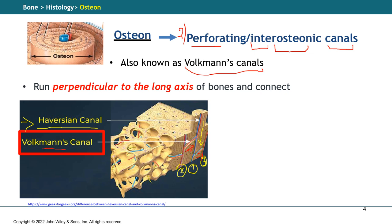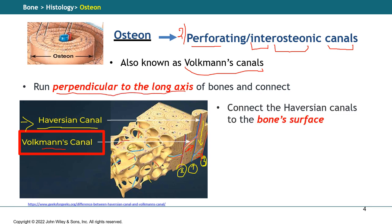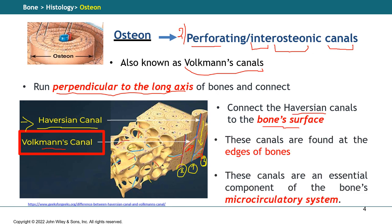The main difference between these canals and the previous ones is that these run perpendicular to the long axis, as shown in the schematic. They are very important because they connect the Haversian canals to the bone surface. This is why they are located at the edges of bones, and they are essential components of the microcirculatory systems of bones.